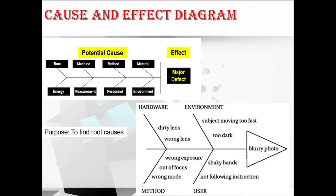Cause and effect diagrams are also known as fishbone diagrams, why-why diagrams, or Ishikawa diagrams. This type of diagram breaks down the causes of the problem statement into discrete branches, helping to identify the main or root cause of the problem. We can refer to the slide — potential causes are on one side and the effect is on the right side. As another example, the causes break into hardware and environment to find the root cause, such as a blurred photo.